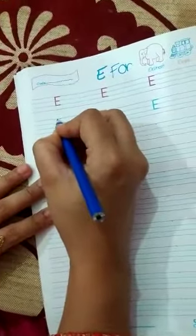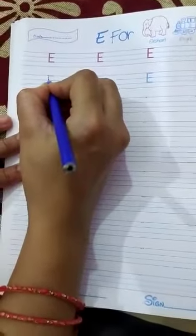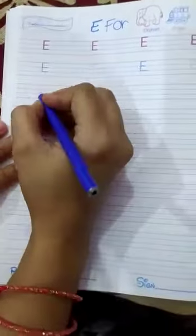First of all we will make a standing line. Then make a small sleeping line. Again sleeping line and again sleeping line. Three times we will make sleeping lines. Okay.